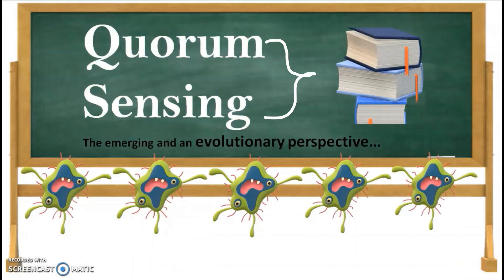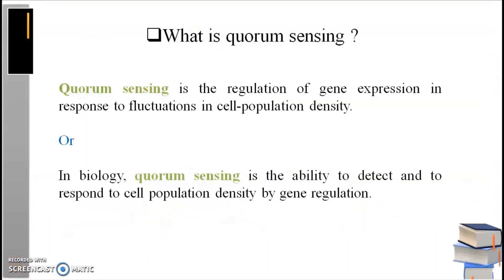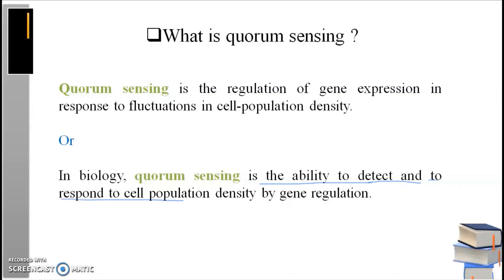It is a very interesting term. Here is the scientific definition of quorum sensing: quorum sensing is the regulation of gene expression in response to fluctuation in cell population density. Another definition is the ability to detect and respond to cell population density by gene regulation.